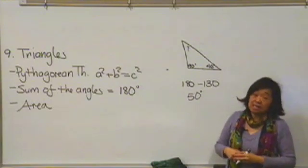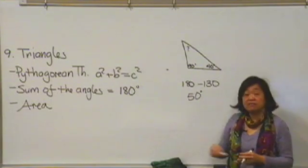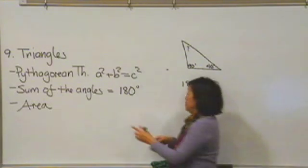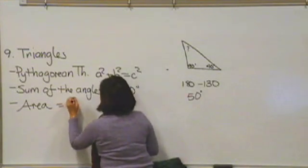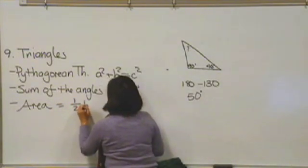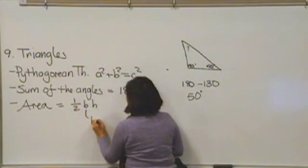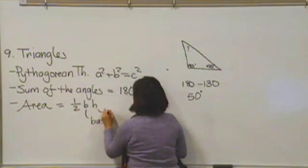And then the last thing I'd like to remind you about is how to find the area of a triangle. The formula for the area of a triangle is 1 half times the base times the height. So B stands for base, and H stands for height.